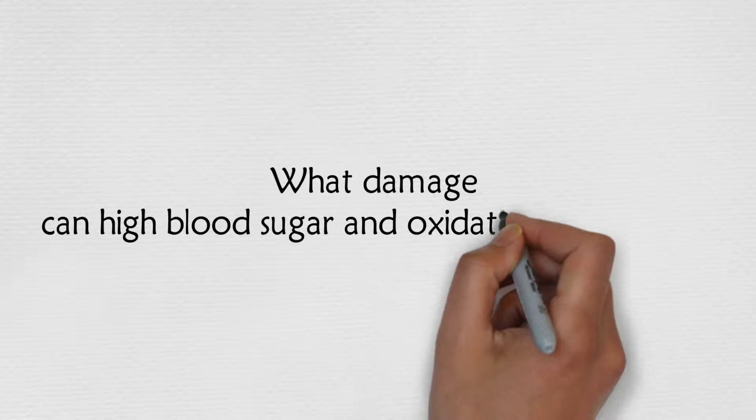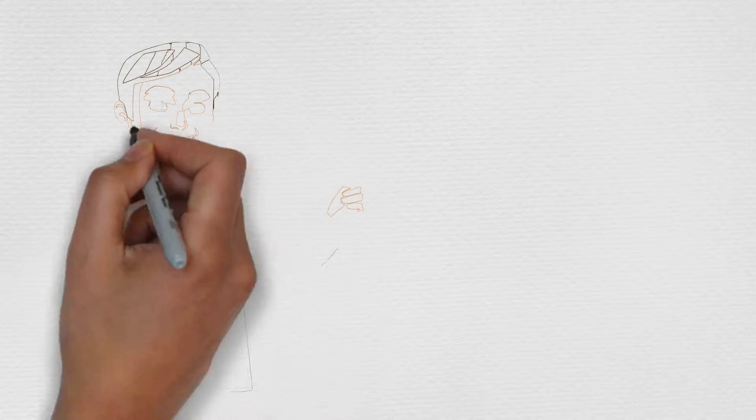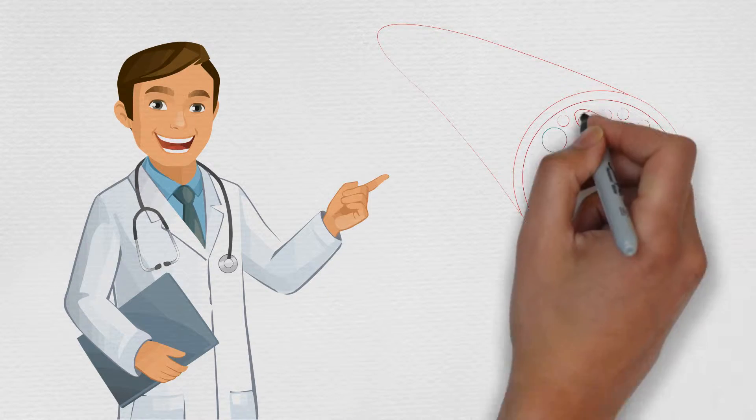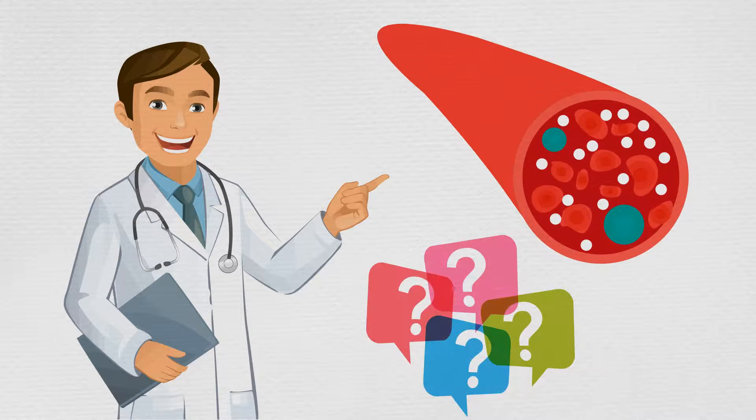What damage can high blood sugar and oxidative stress cause? It is common knowledge that having high blood sugar levels is damaging to our health, but in what way is it harmful to us?